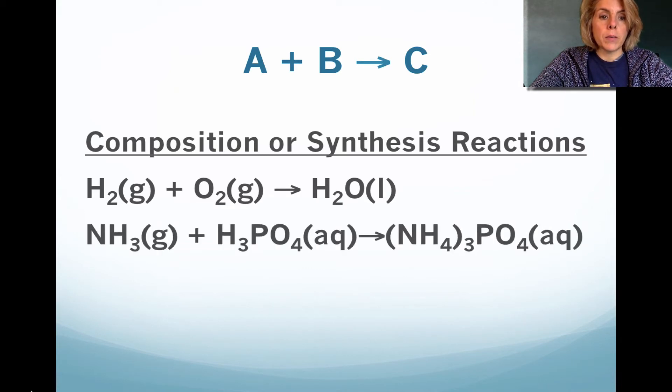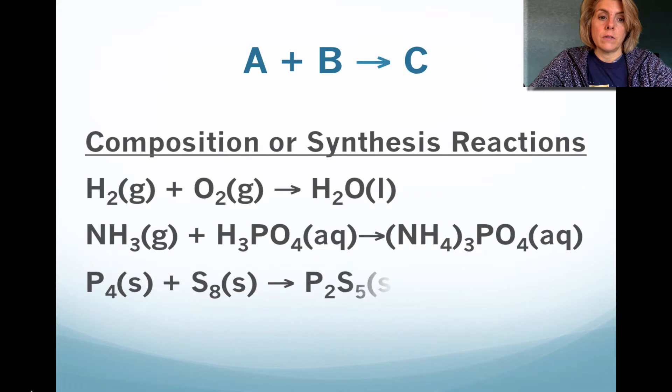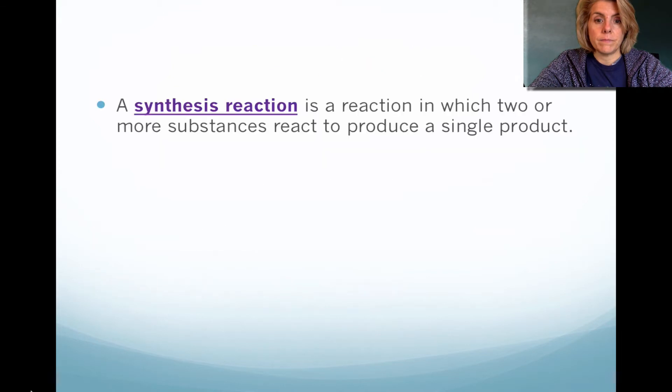Another example is ammonia. If we combine it with phosphoric acid, it'll form ammonium phosphate. Another example is if we take the elemental form of phosphorus, which is P4, and combine it with elemental sulfur, which is S8, we could get diphosphorus pentasulfide. So synthesis reaction: we're looking at two or more substances reacting to form one product.